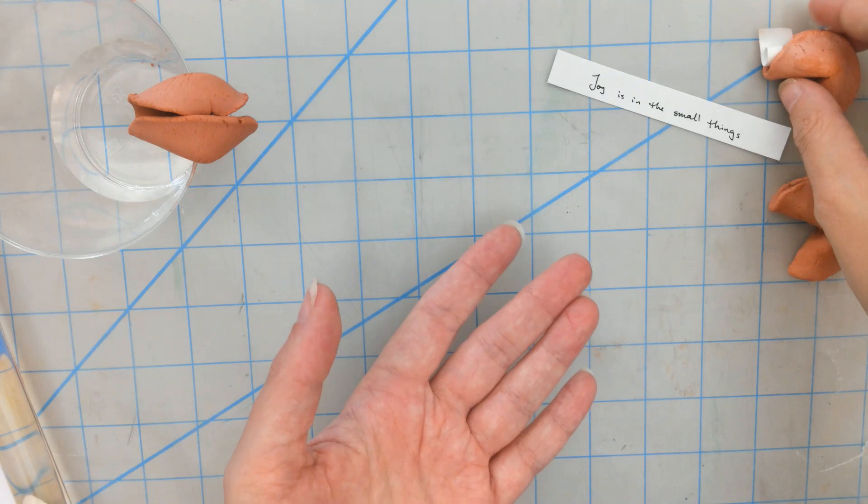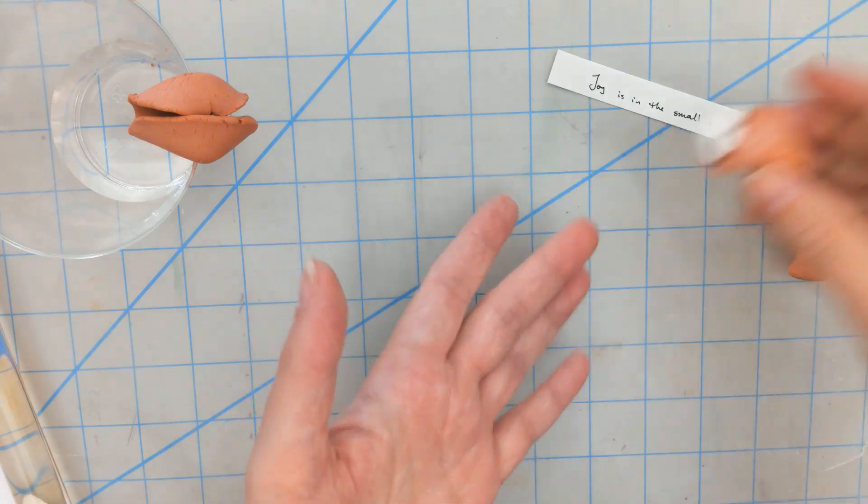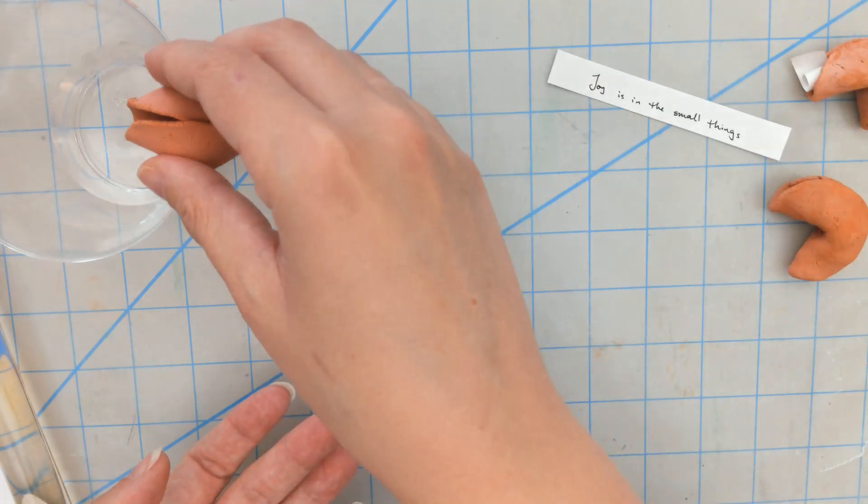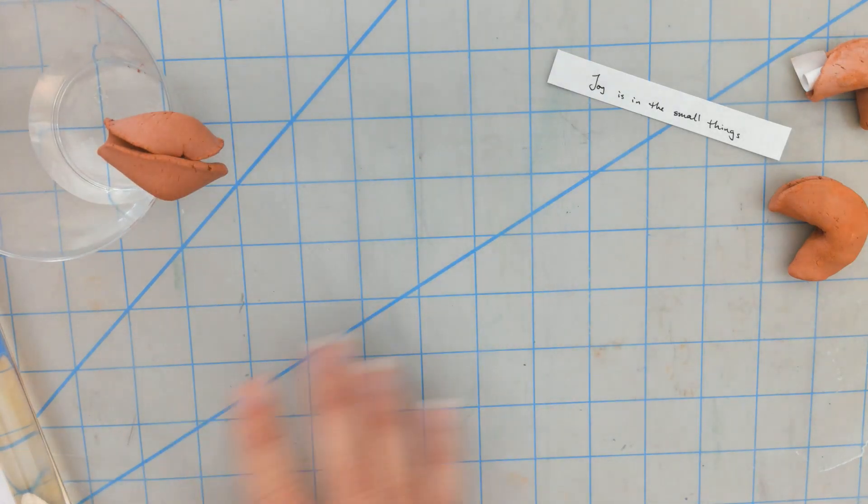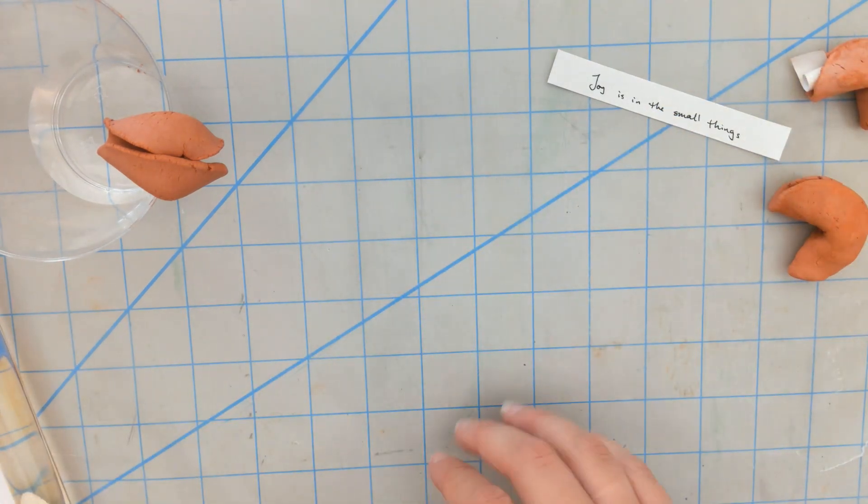Hello and welcome to this month's Get Creative with Suffolk Public Library. This month we are making air dry clay fortune cookies. We're gonna be making a couple.